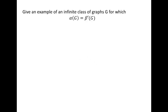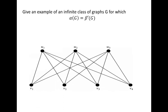Can you think of an infinite class of graphs for which the independence number equals the minimum edge covering number? There could be many possibilities — you can think of the cycle graph, considering whether n is even or odd. One more interesting example is the complete bipartite graph.